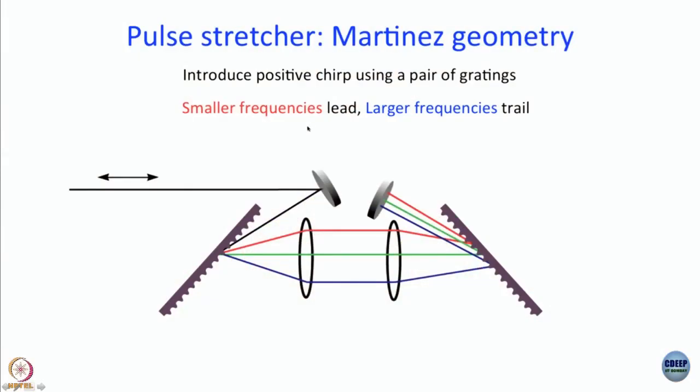It is not such a big problem, because in any case you want to stretch. I am sure you do not want to use it in a compressor, but in a stretcher this works. Martinez had shown that the efficiency of this geometry is quite good. One difference is that here in Martinez geometry, you end up introducing a positive chirp.